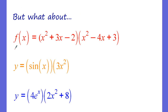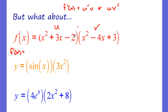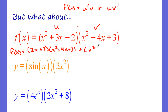Let's apply the product rule. I'm going to call the first function u and the second v. We do u prime v plus u v prime. So I do the derivative of u: I get 2x plus 3, and I multiply that by v, which is x squared minus 4x plus 3. Then we keep u the same — x squared plus 3x minus 2 — and do the derivative of v, getting 2x minus 4. That is the derivative. You don't have to distribute or clean it up at all.